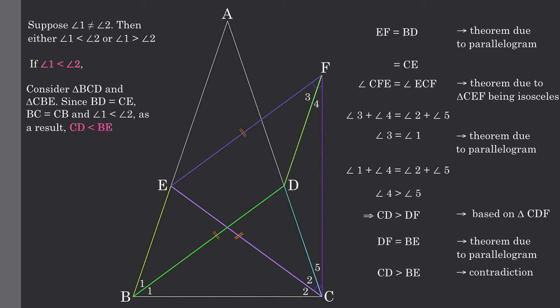Next, let's see what happens if angle 1 is greater than angle 2. By using the process we used earlier, considering triangle BCD and triangle CBE, we get that CD must be greater than BE. But by using the process with the parallelogram, we show that this is also a contradiction. Therefore, side CD must be equal to side BE.